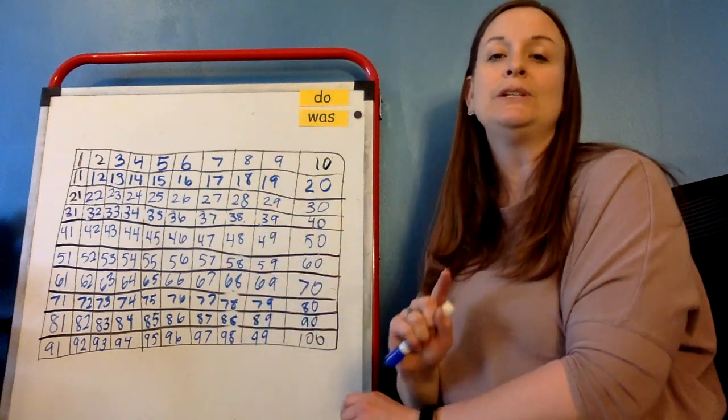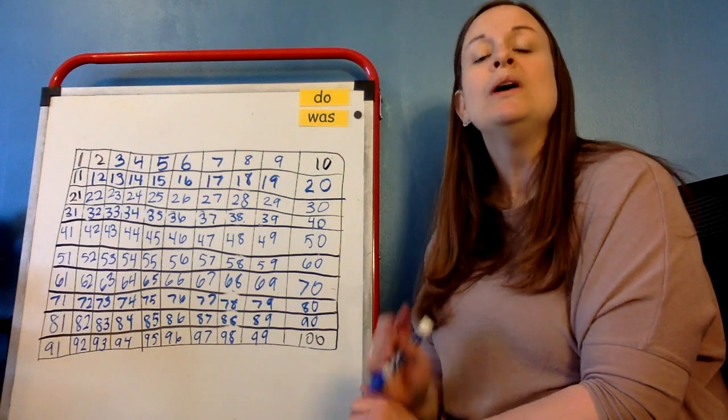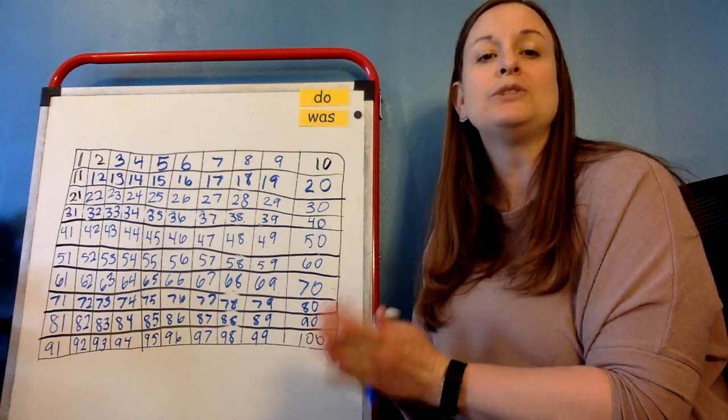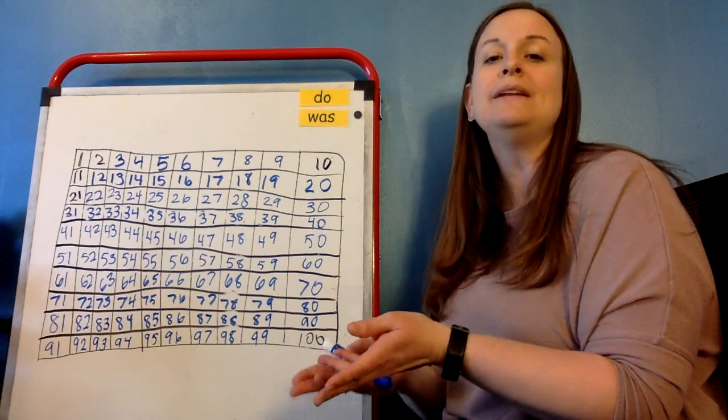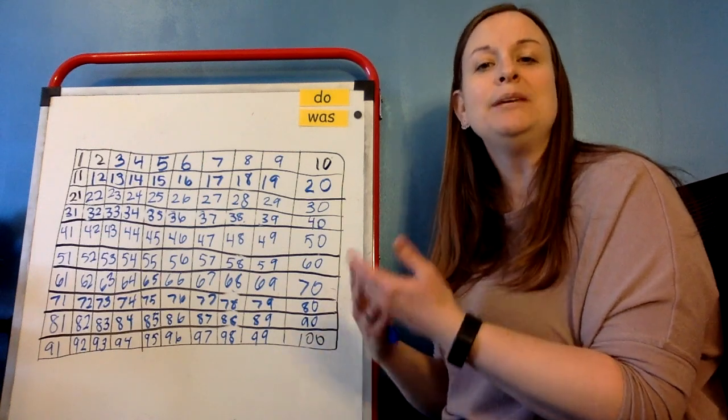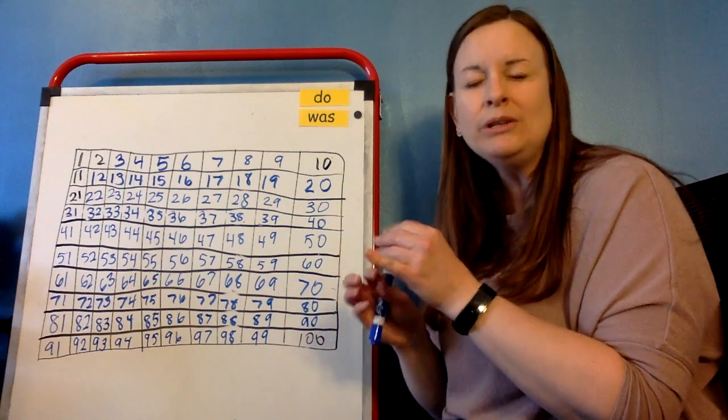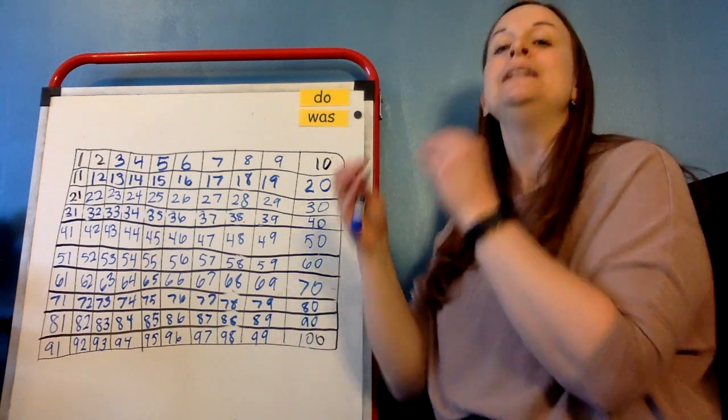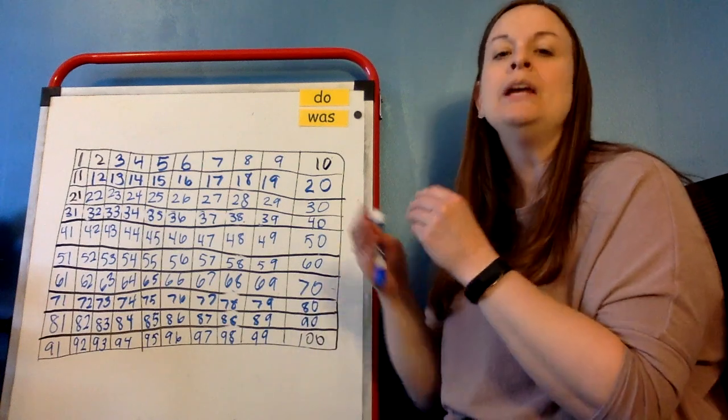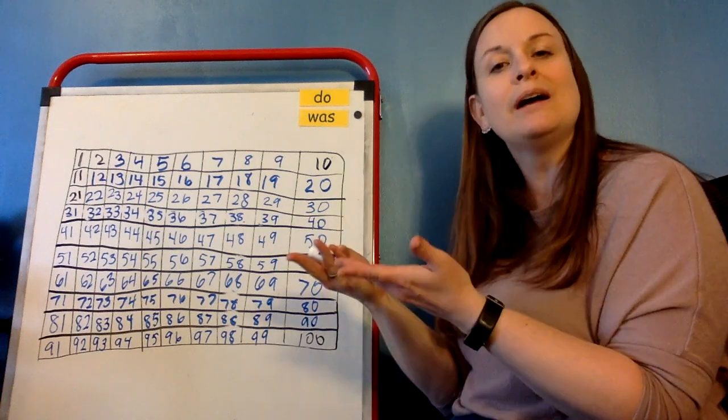But there's one more thing I need for you to do today. So we need to look at a strategy called counting on. So if I tell you start at the number 18 and keep counting, you don't go 1, 2, 3, 4, 5, 6, 7, 8, 9, 10, 11, 12, 13, 14, 15, 16, 17, 18, 19, 20, 21. You just need to know in your head what comes after that.